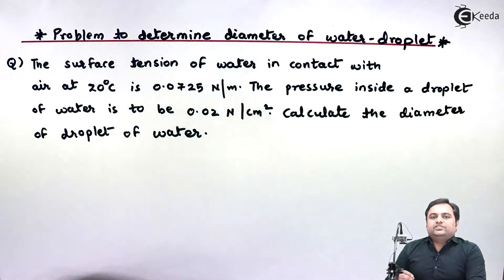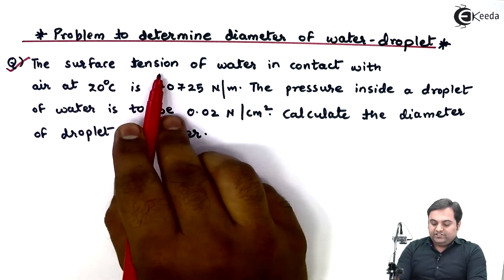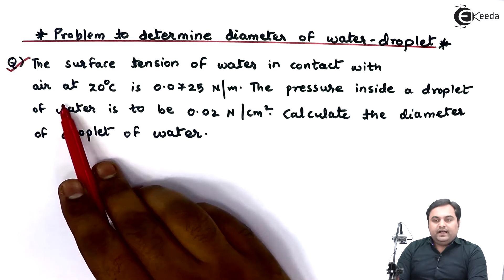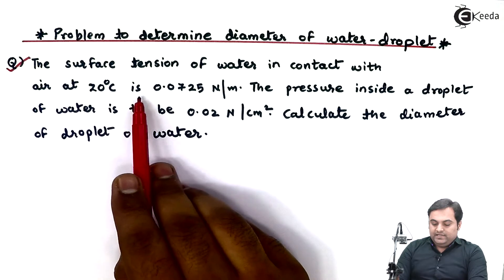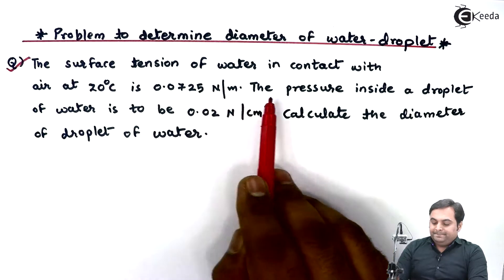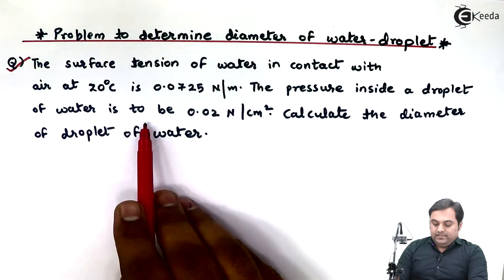If surface tension is given, let us see this question. The surface tension of water in contact with air at 20 degrees Celsius is 0.0725 Newton per meter. The pressure inside a droplet of water is to be